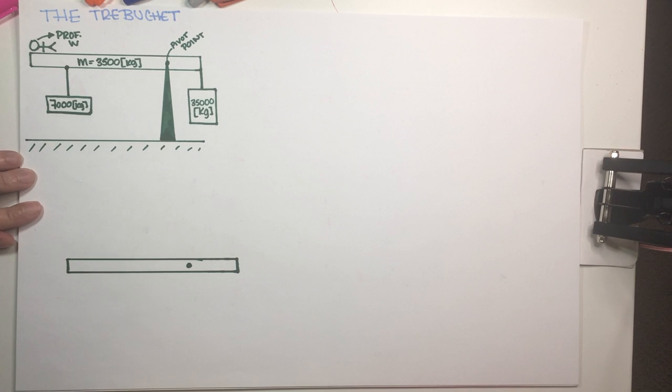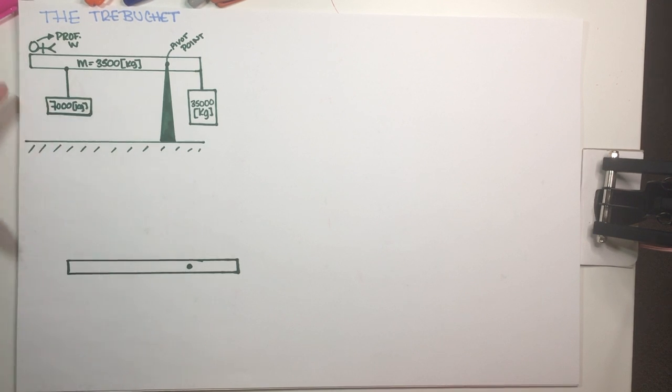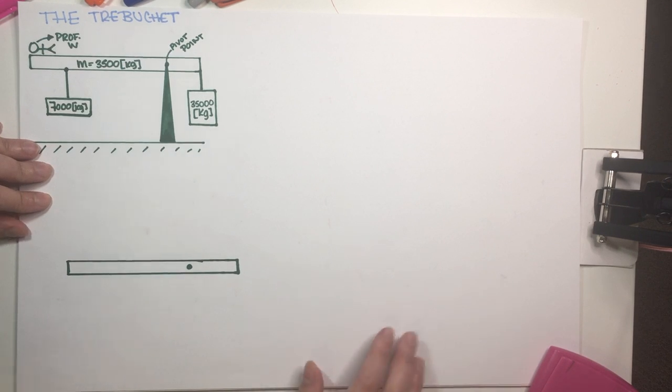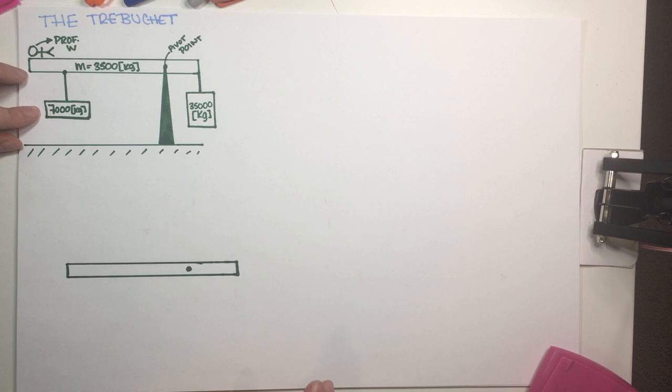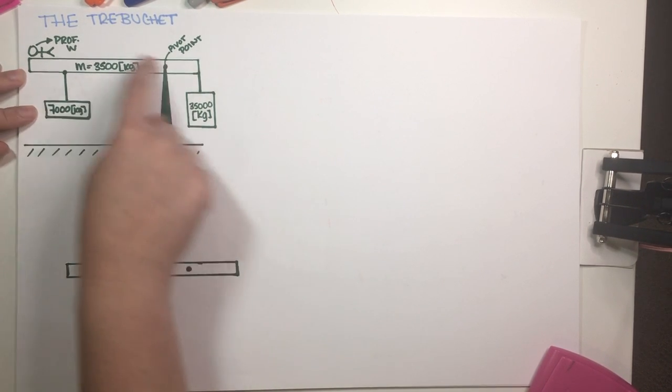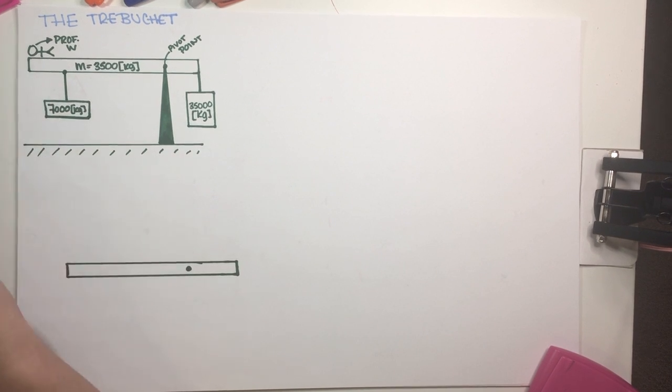Alright, so as you can see I have everything written down here. So I have the picture of the device and I have all of the masses. So let's just go ahead and figure this out. The first thing that we have to do is a complete force diagram, meaning we need to put all of the forces that are acting on this wooden beam. So let's just go ahead and do that.